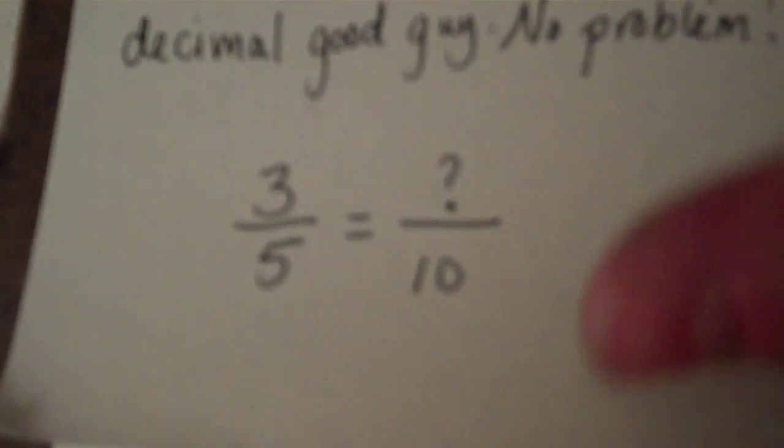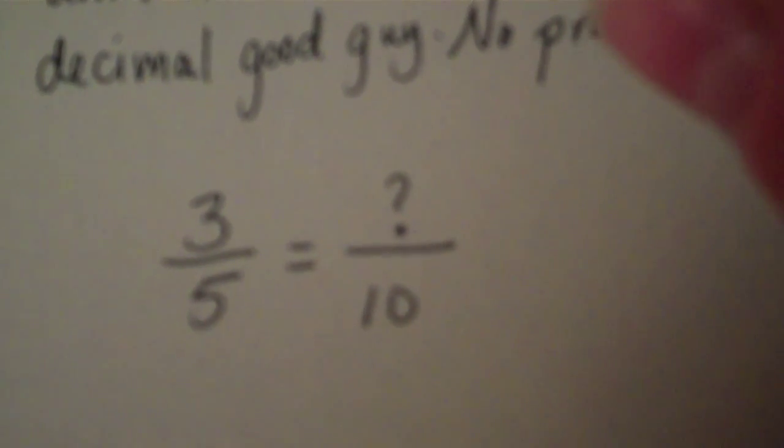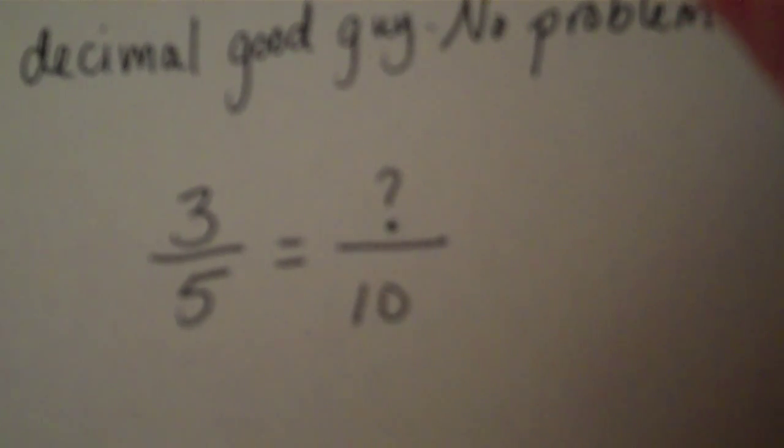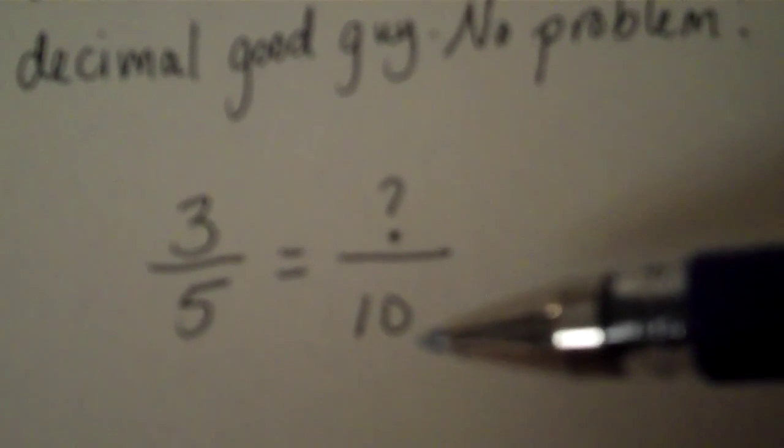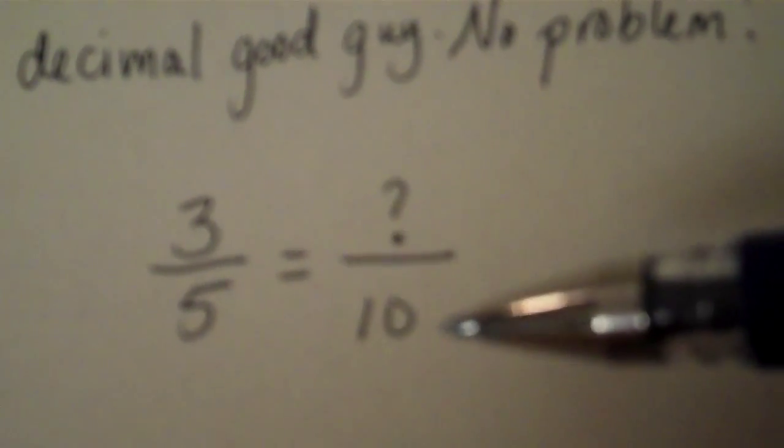Here's an example. Three fifths. He's gonna crush it into a friendly decimal good guy that ends in the word tenths when I say it out loud. Three fifths is how many tenths?